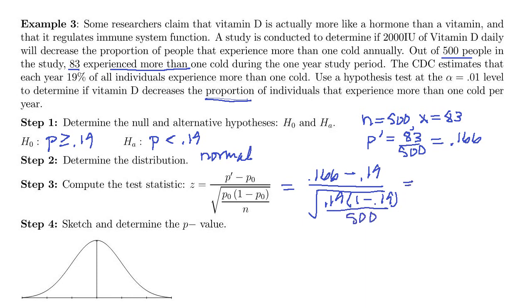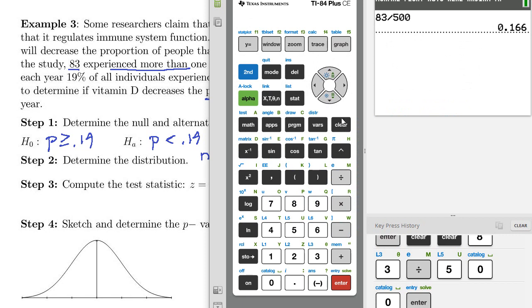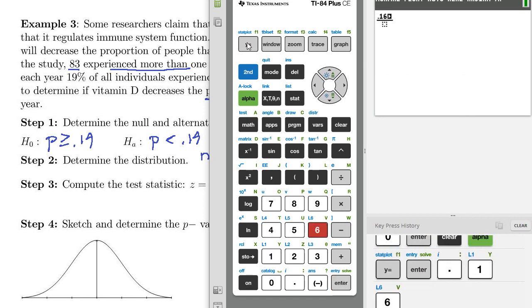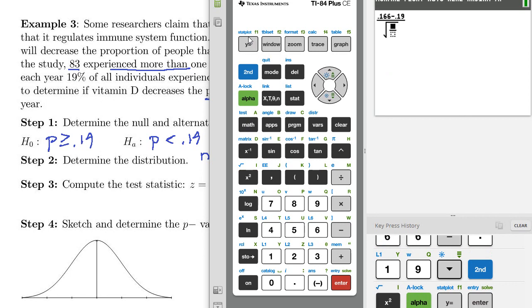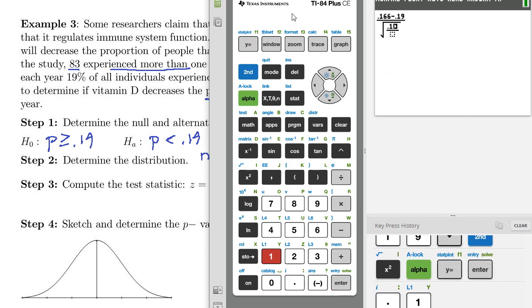So let's compute that on the calculator. I'm going to do alpha y equal enter to get my horizontal fraction, 0.166 minus 0.19 on top. Downstairs, we need a square root, and then another alpha y equal enter.